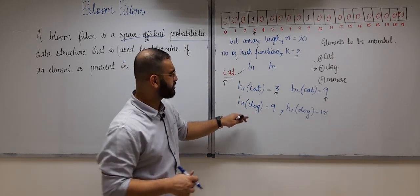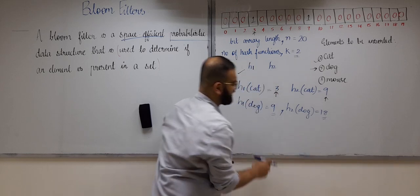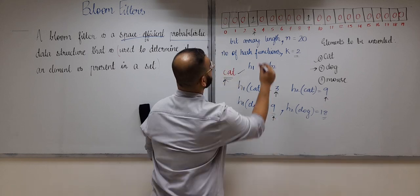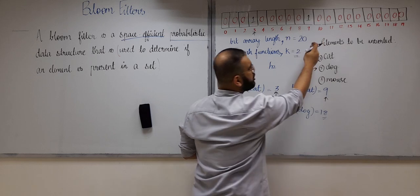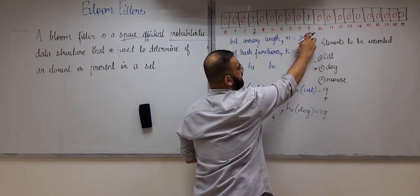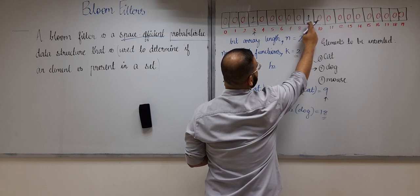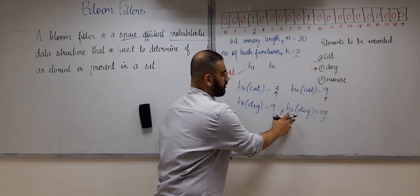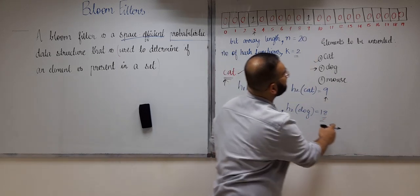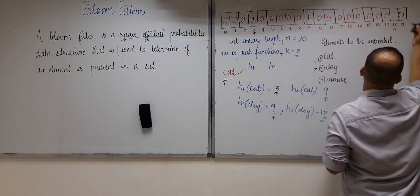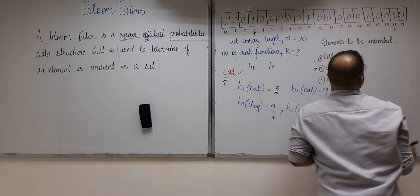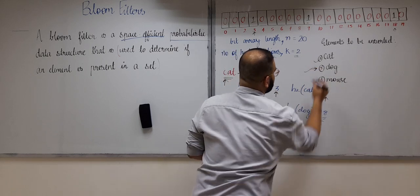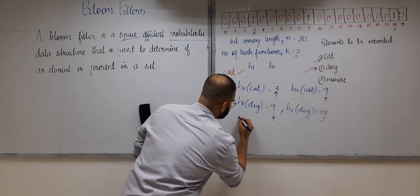Now let's insert the second element 'dog'. Suppose h1(dog)=9 and h2(dog)=18. We go to index 9 and ensure the bit is 1 — it is already 1 from inserting cat, so no change needed. For h2, we go to index 18 and change the bit value to 1. Dog has been inserted.